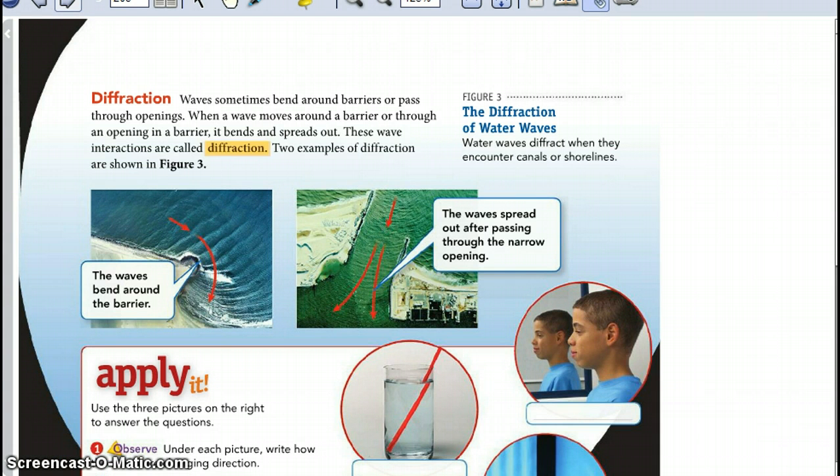Diffraction. Waves sometimes bend around barriers or pass through openings. When a wave moves around a barrier or through an opening in a barrier, it bends and spreads out. These wave interactions are called diffraction. Two examples of diffraction are shown in figure 3.